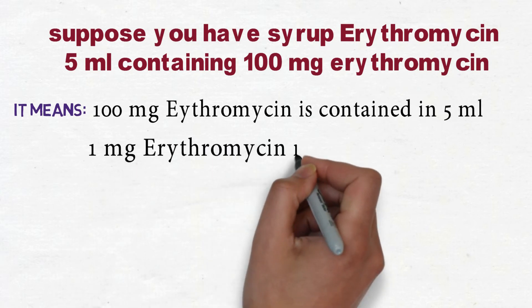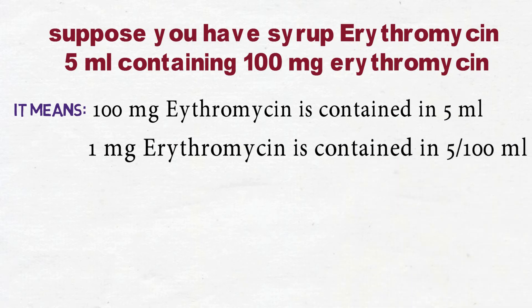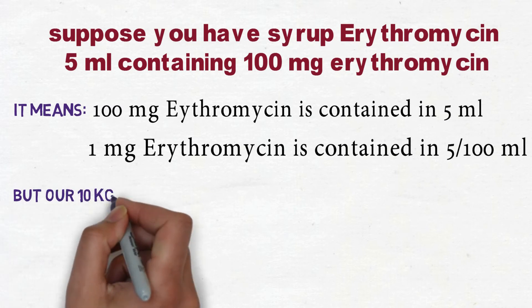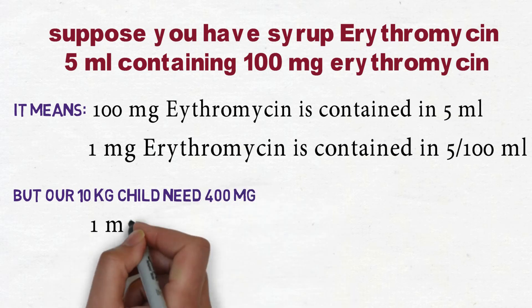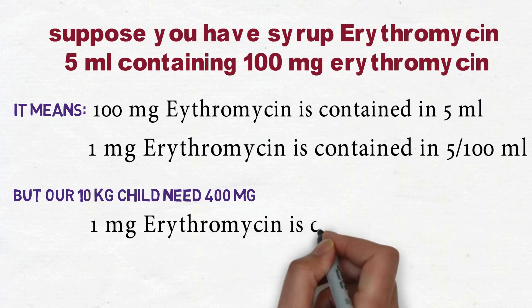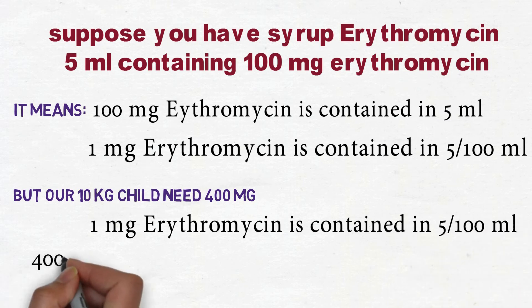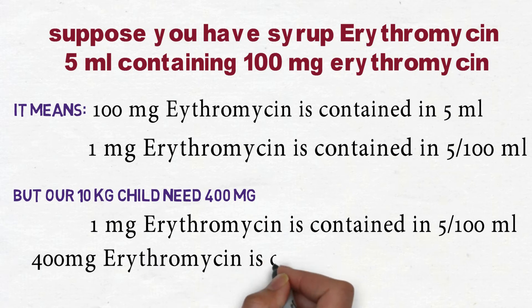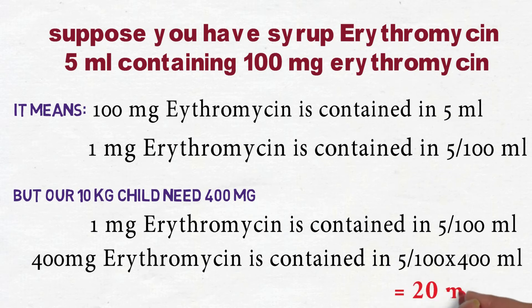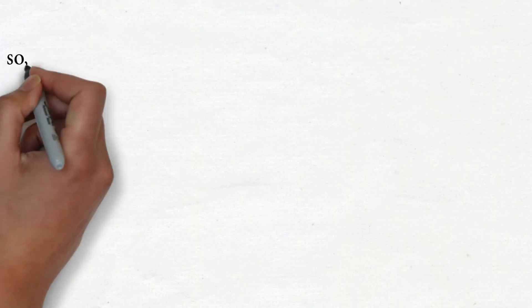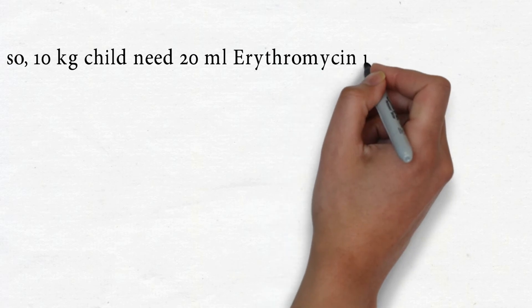Using the formula: 1 mg is contained in 5/100 ml, so 400 mg is contained in (5/100) × 400 ml, which equals 20 ml. Therefore, a 10 kg child needs 20 ml of erythromycin in one day, that is 24 hours.